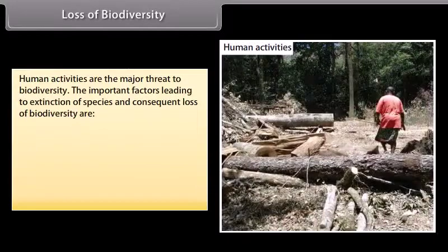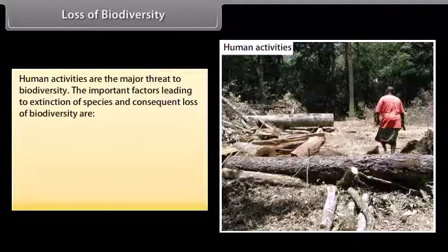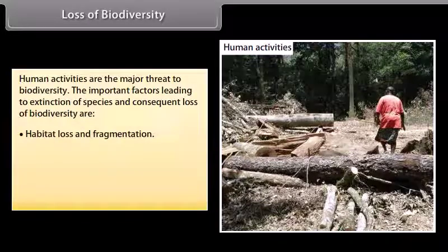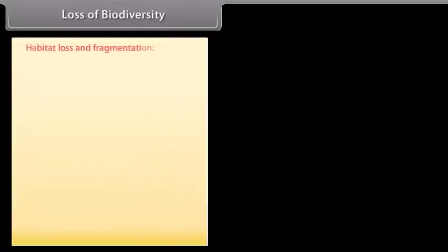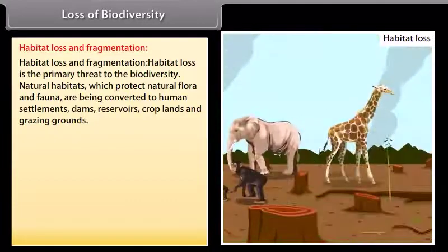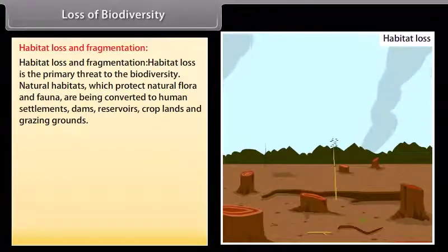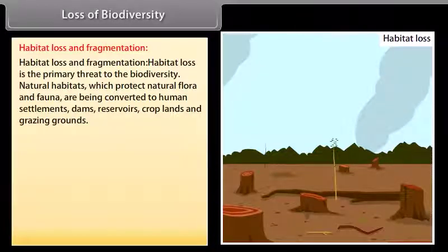Loss of biodiversity. Human activities are the major threat to biodiversity. The important factors leading to extinction of species and consequent loss of biodiversity are: habitat loss and fragmentation, over-exploitation, alien species invasions, and co-extinctions. Habitat loss is the primary threat to biodiversity. Natural habitats which protect natural flora and fauna are being converted to human settlements, dams, reservoirs, croplands, and grazing grounds.